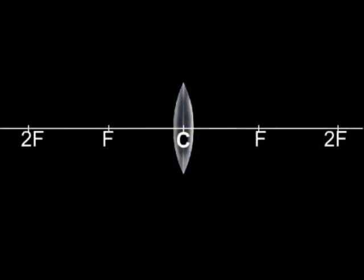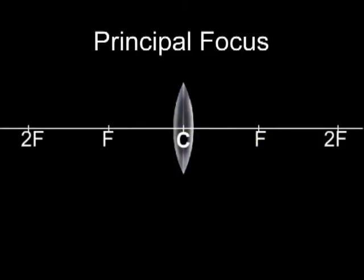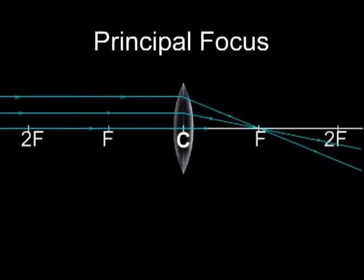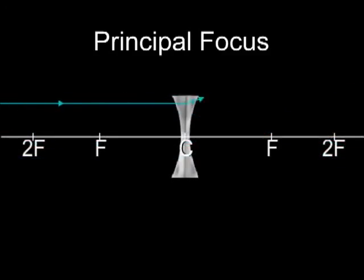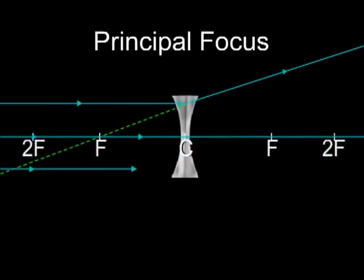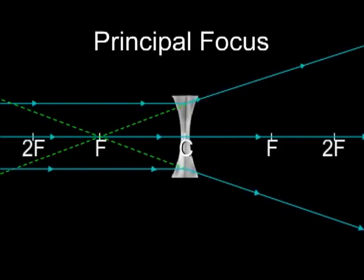And now, we need to define the principal focus. When a light beam parallel to the principal axis is incident on a lens, in the case of a convex lens, after refraction, it converges at a point on the principal axis. In the case of a concave lens, it diverges from a point on the principal axis. You can see in the figures that point F represents the principal focus, and the length CF in each case is the focal length.